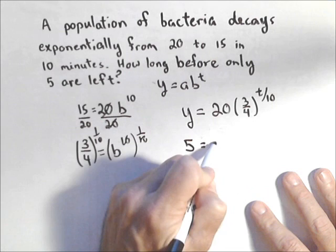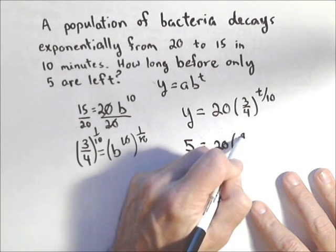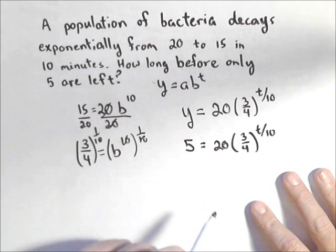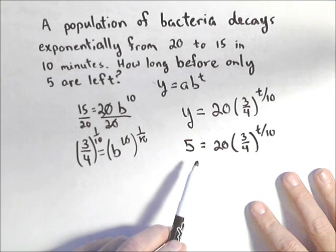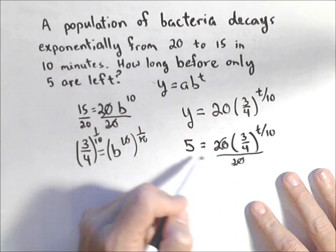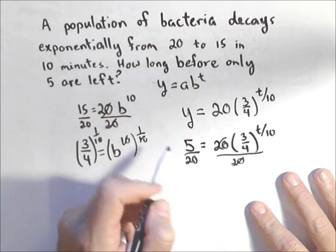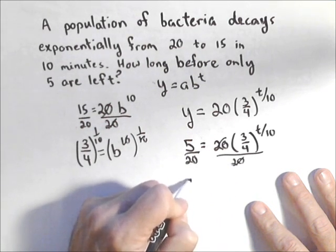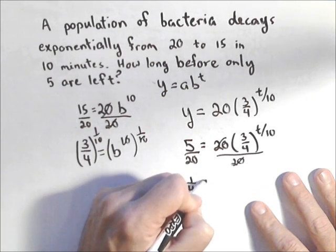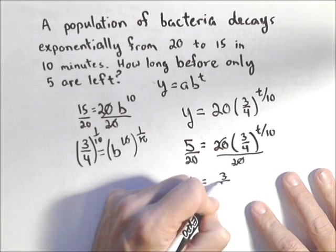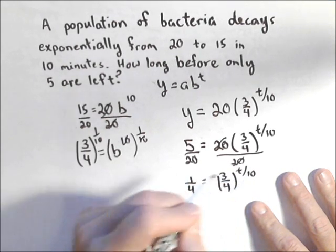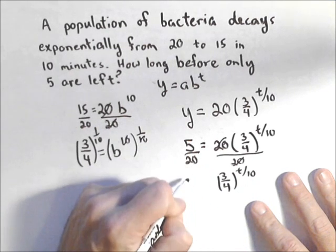Five equals 20 times 3 fourths to the T over 10. And now we can go to work. We can divide both sides by 20 again. That's gonna reduce down to 1 fourth. So I have 1 fourth equals 3 fourths to the T over 10. Let me get a little more space here.